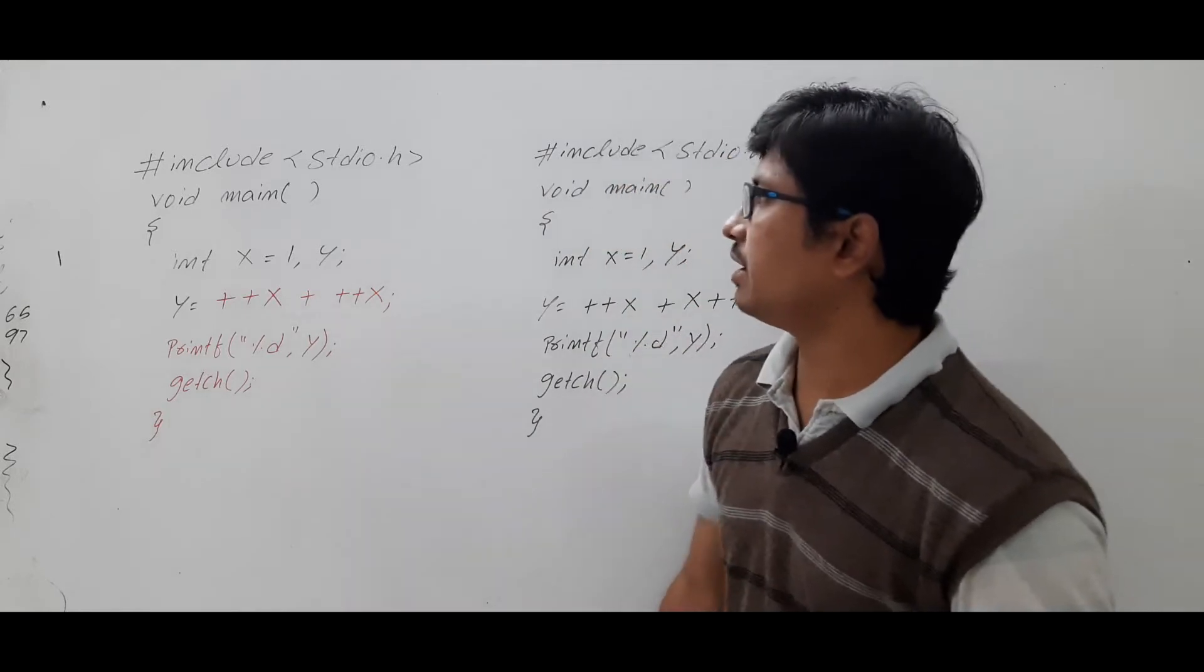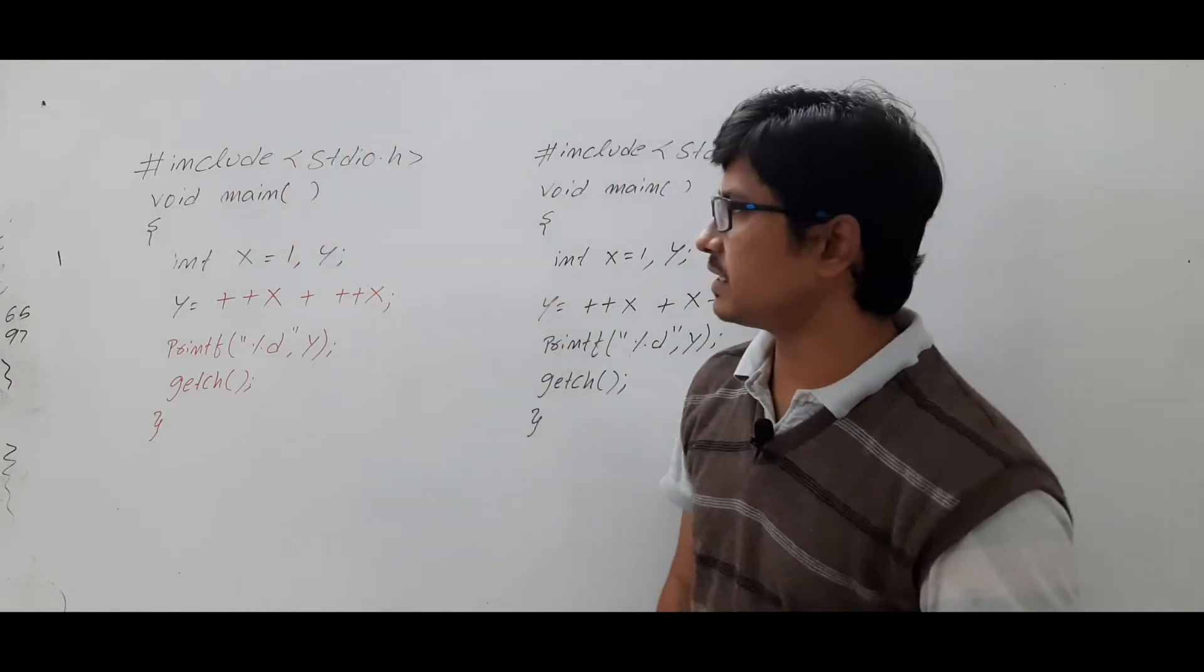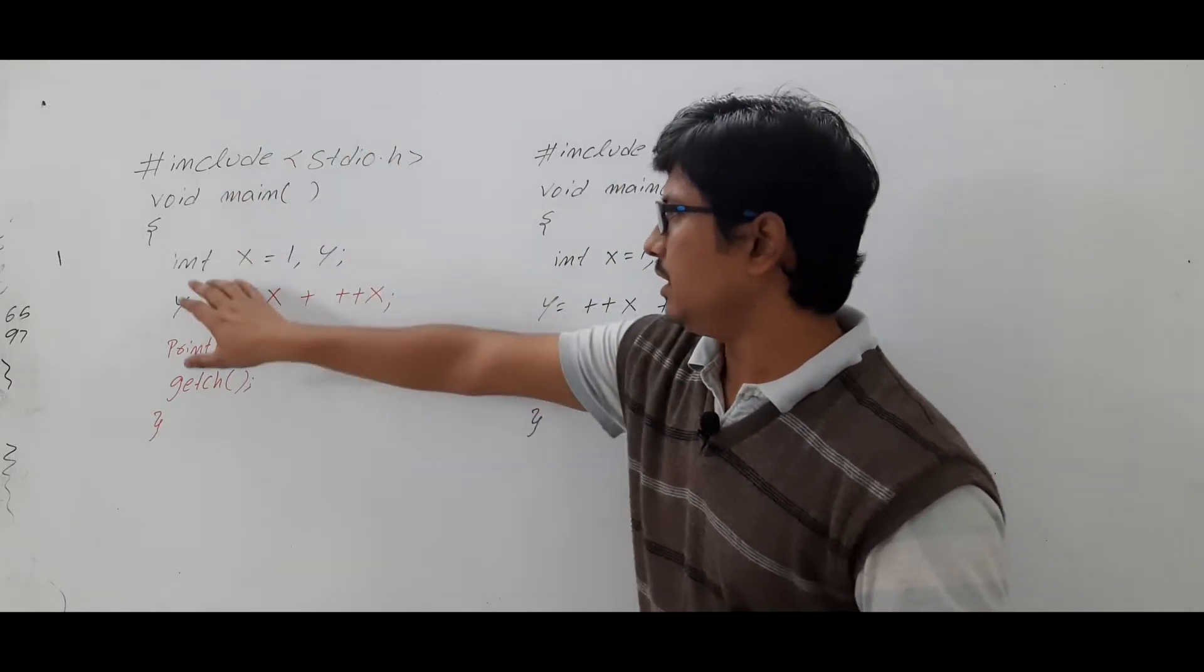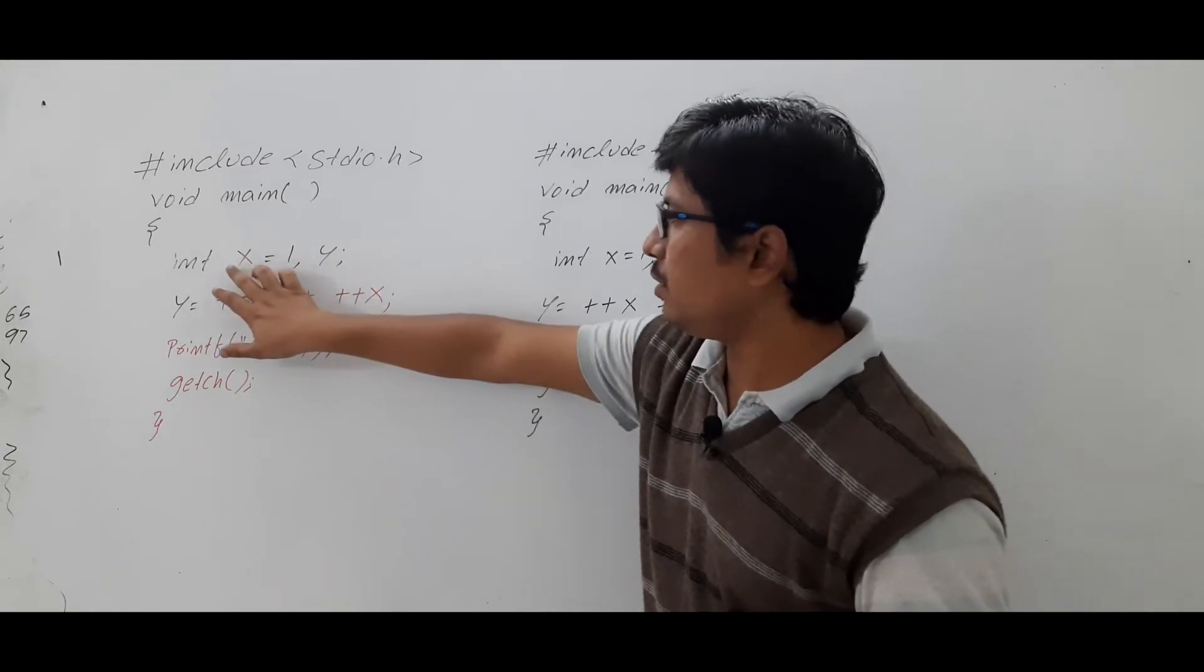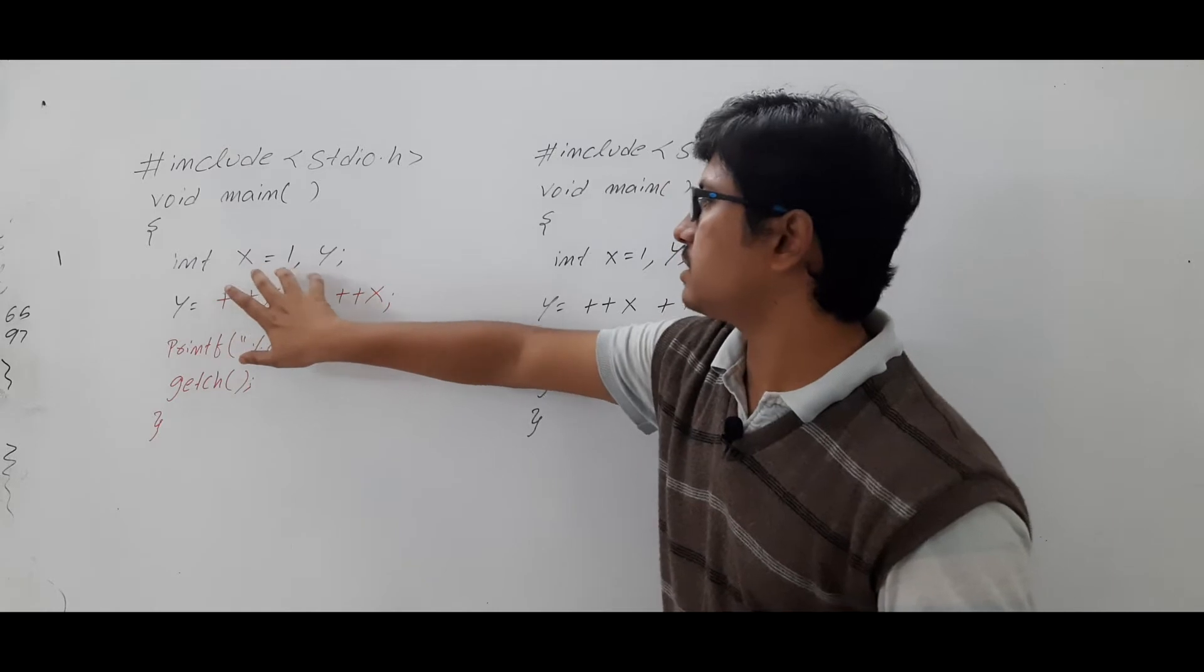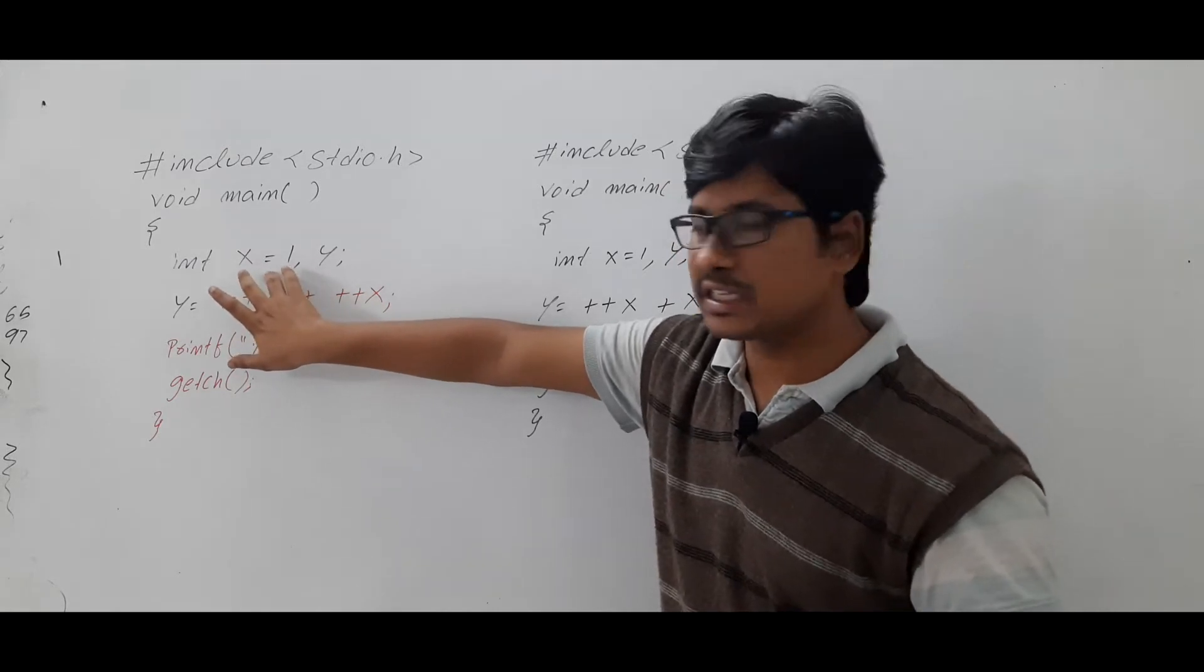Come to program 1. I have written hash include stdio.h void main, int x is equal to 1 comma y. So I have taken two integer variables x and y and I have initially the x value as 1.